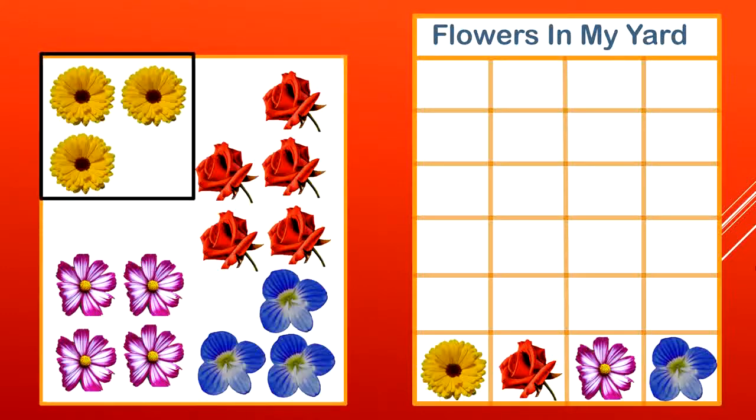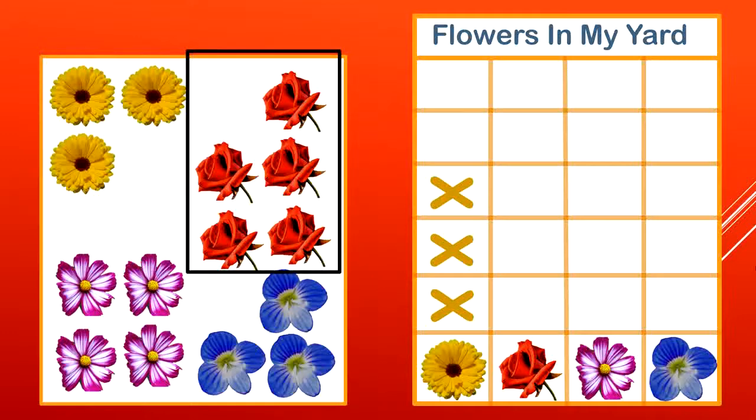Yellow flowers. How many yellow flowers do you count? One, two, three. Now red flowers. How many do you count? One, two, three, four, five.